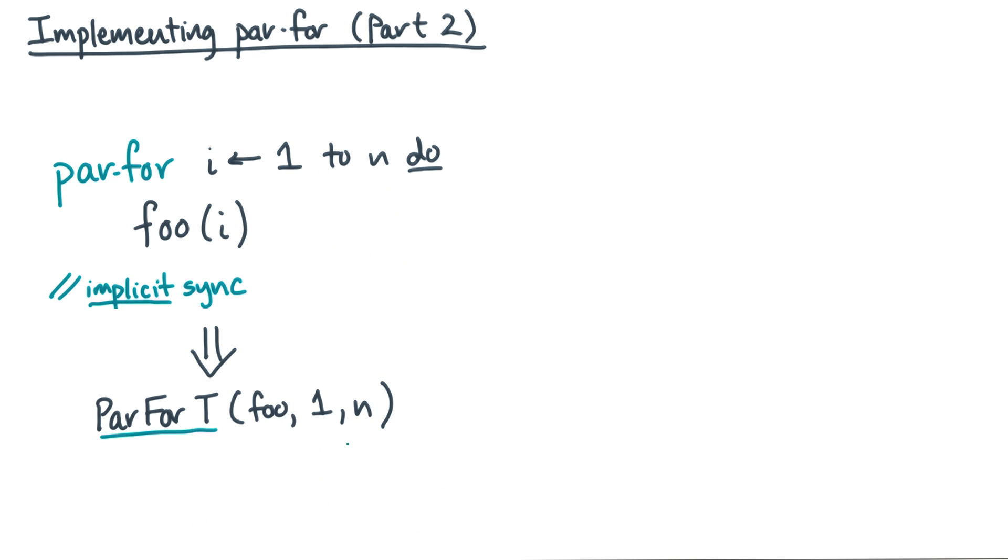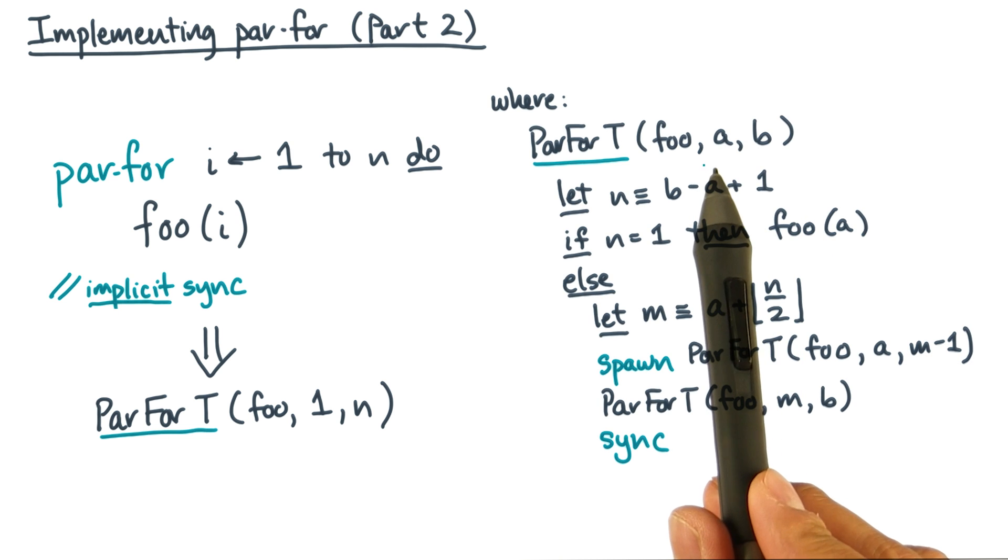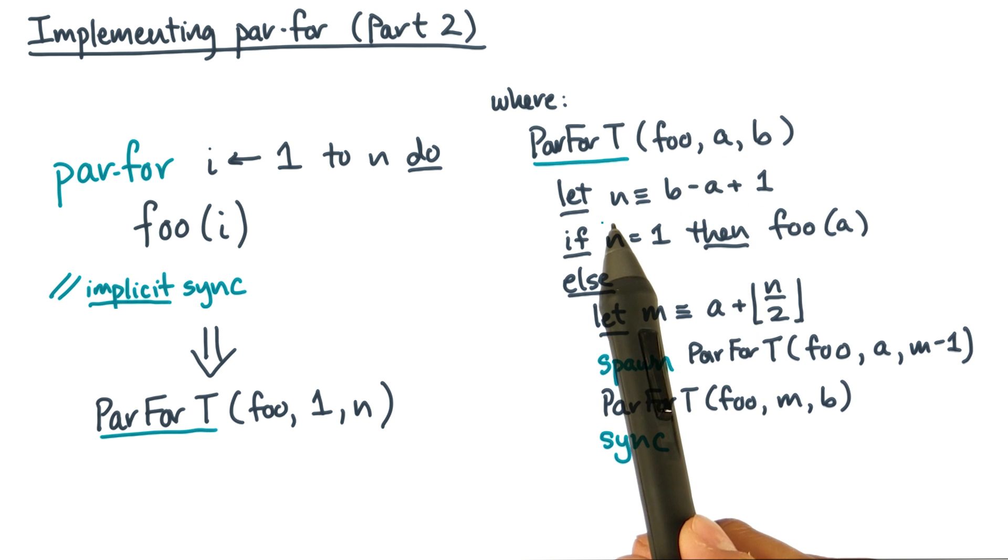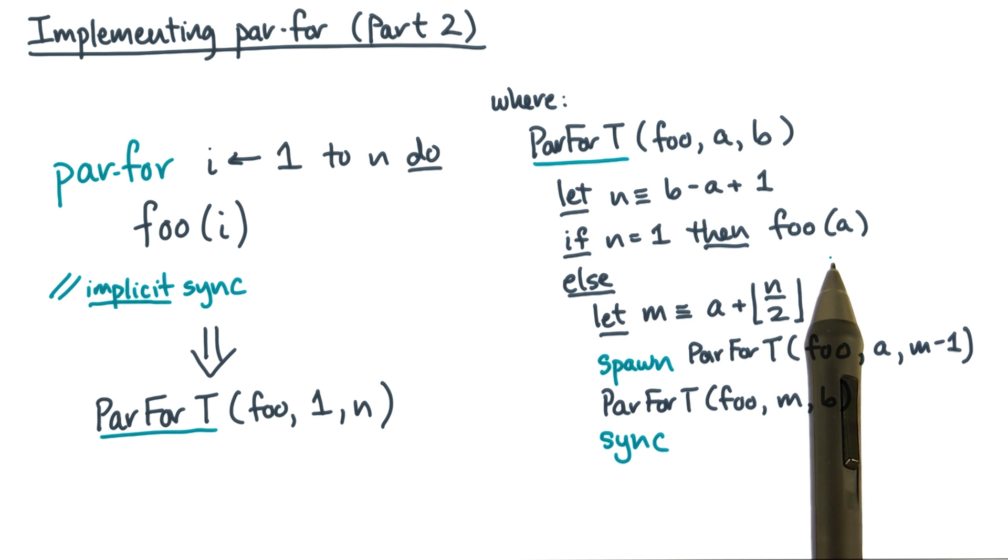The procedure call itself is implemented as follows. We figure out how many iterations there are, call that little n. If there's only one iteration, then we'll call foo on a.